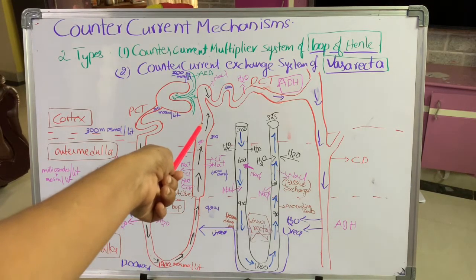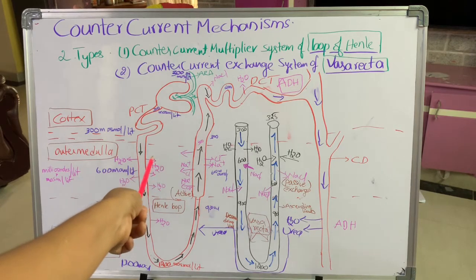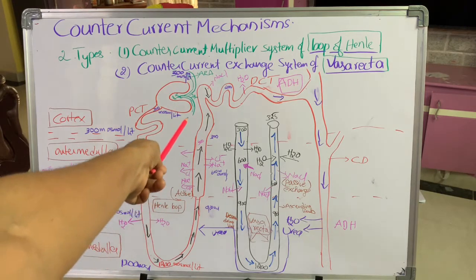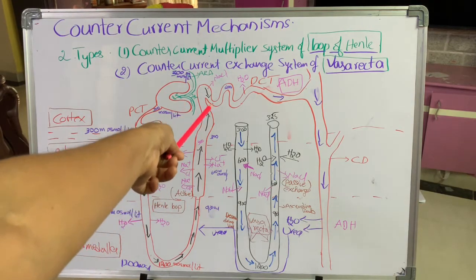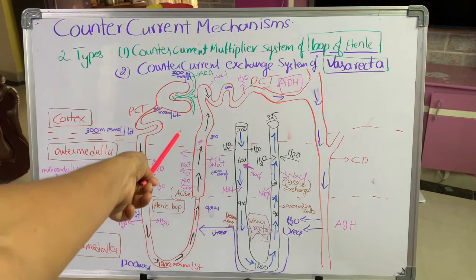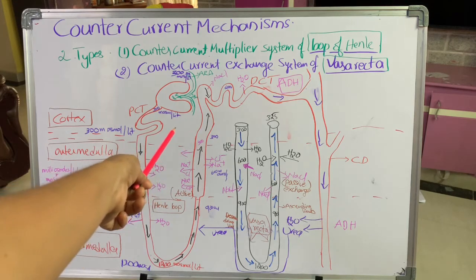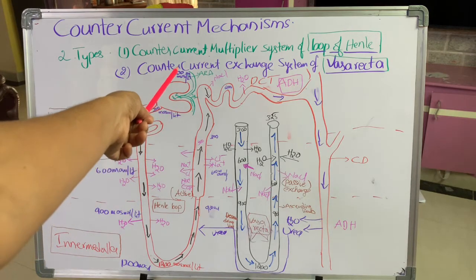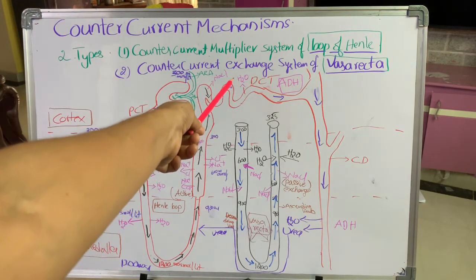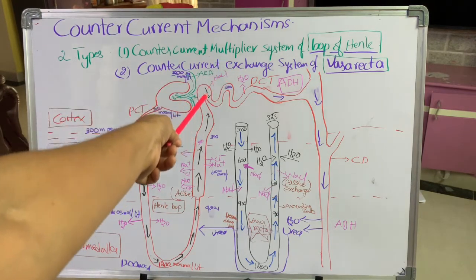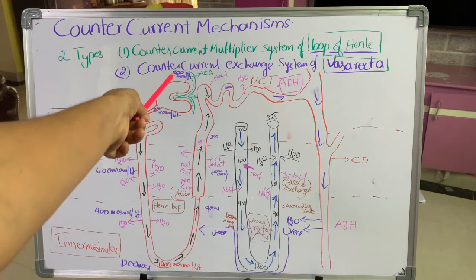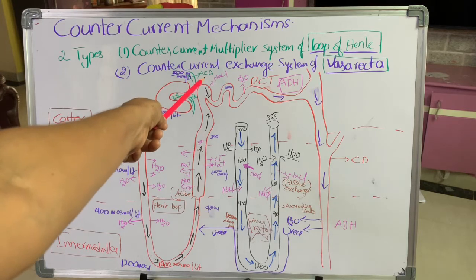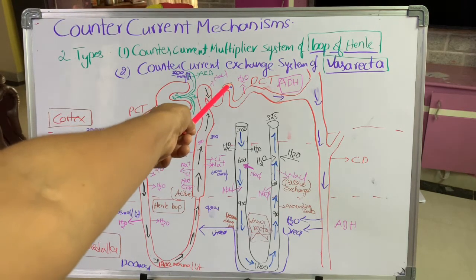From the ascending limb of the loop, as solutes move outside and water does not enter, the concentration of the filtrate in the ascending limb decreases. It becomes again 300 milliosmoles, which is isotonic to the plasma, as it enters the cortex. As it enters the distal convoluted tubule, some more water is reabsorbed and it is also permeable to solutes, so NaCl is moved out, and the osmolarity of the filtrate decreases further to 200 milliosmoles per liter in the DCT.